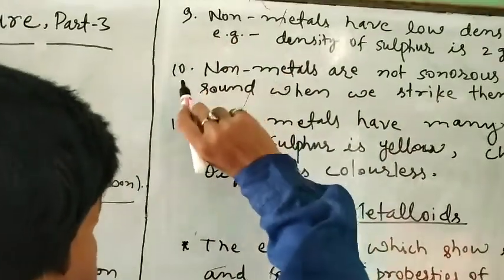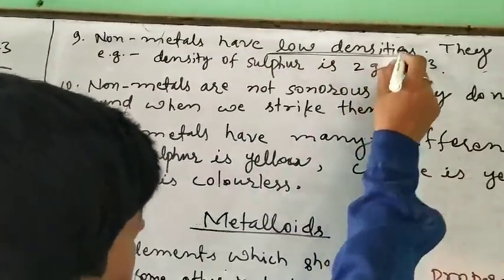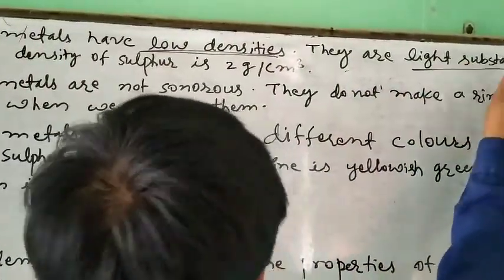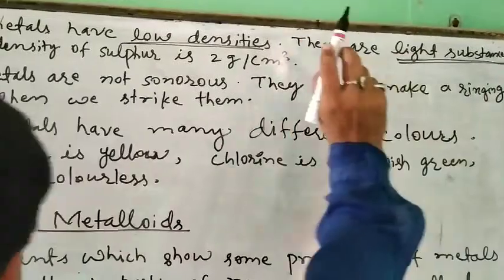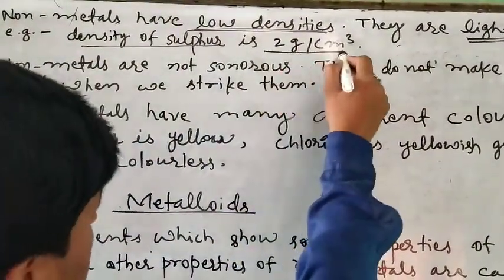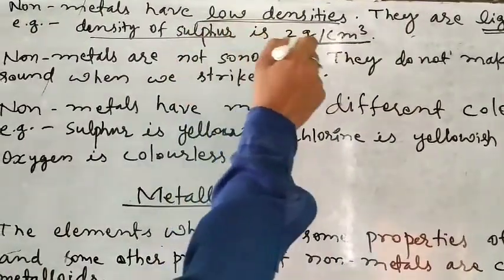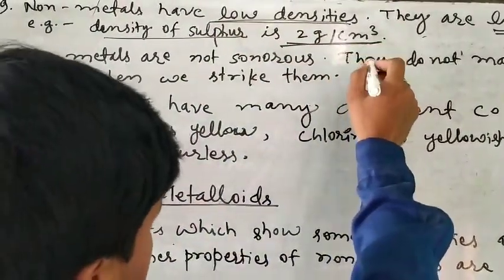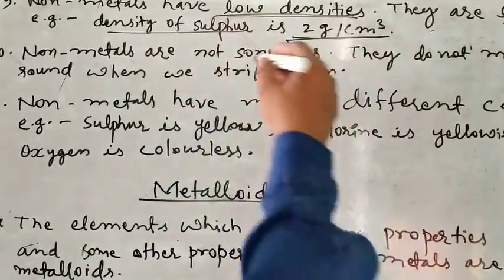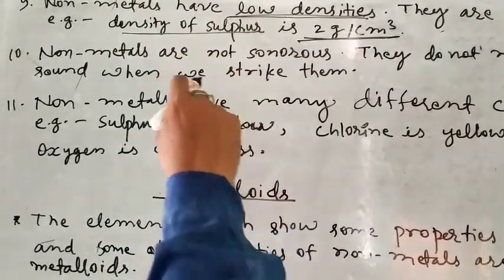Another point is that non-metals have low densities, so they are light substances. For example, the density of sulfur is only 2 grams per centimeter cube, which is very low. Many non-metals are in a gaseous state, so they have very low density.